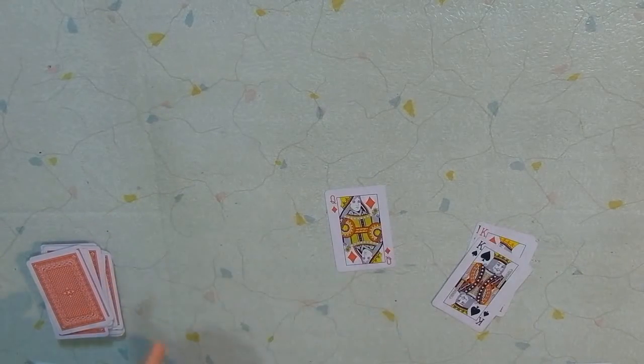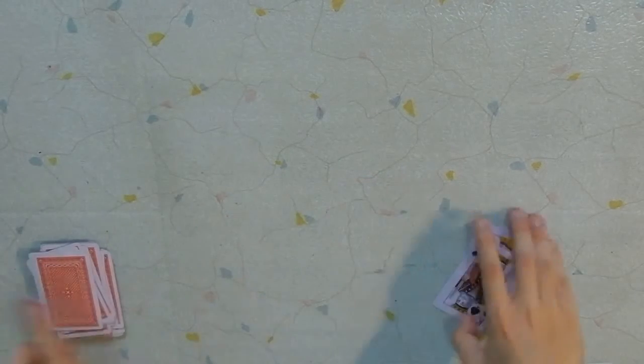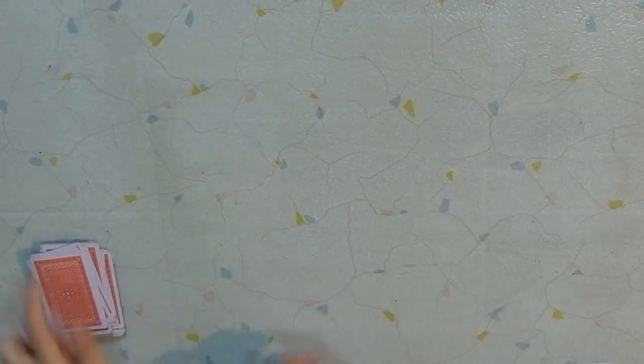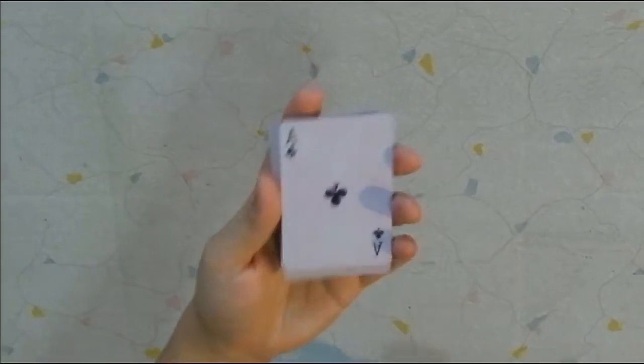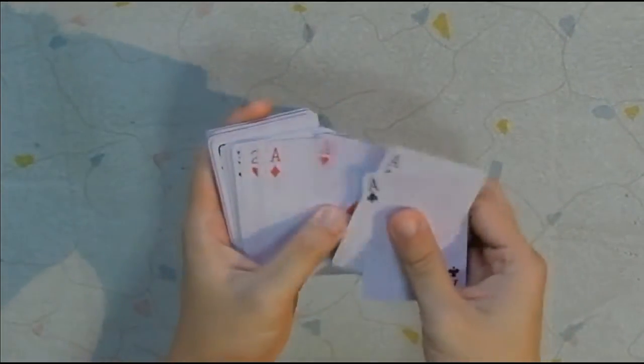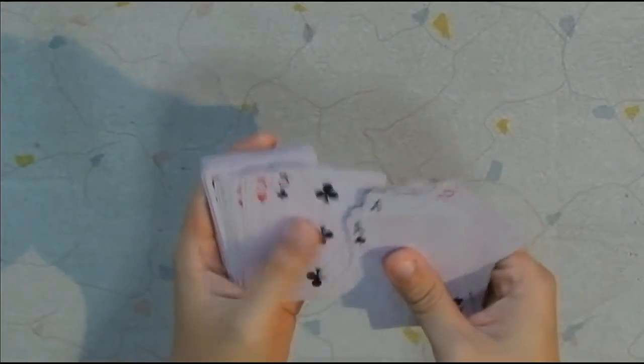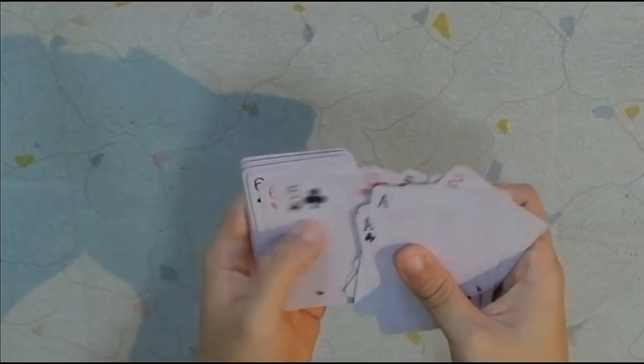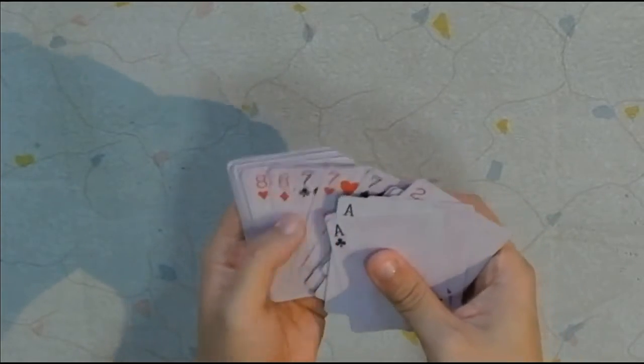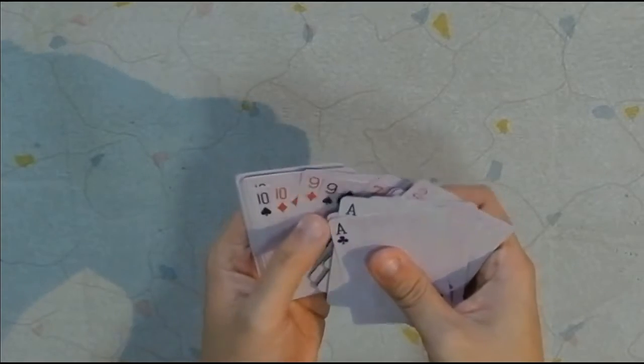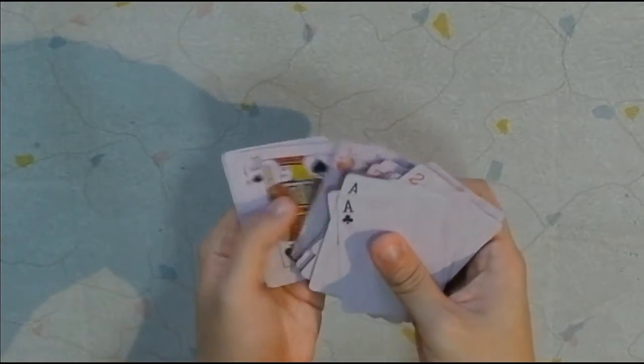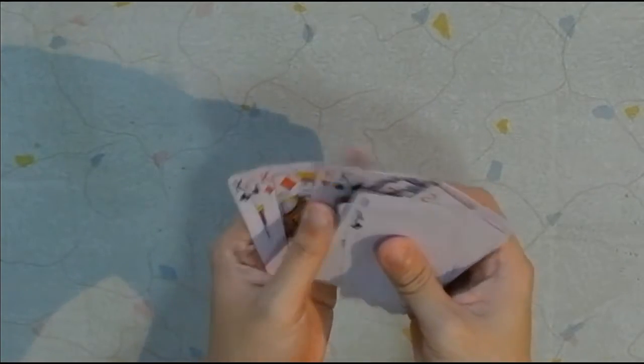Everything is now sorted. And just to show you that everything is in order: Here are the aces. Twos. Threes. Fours. Fives. Sixes. Sevens. Eights. Nines. Tens. Jacks. Queens. And Kings.